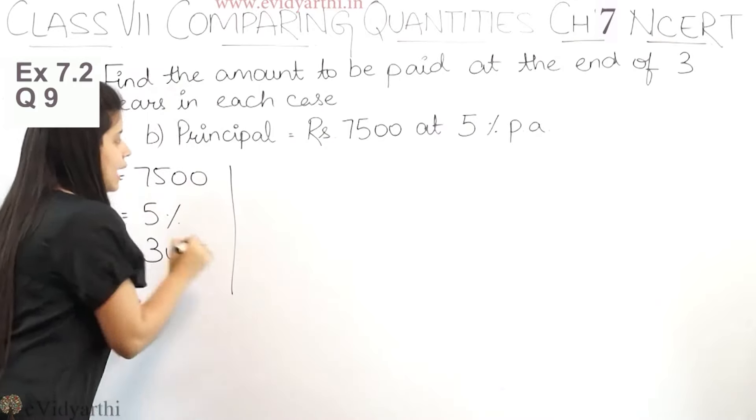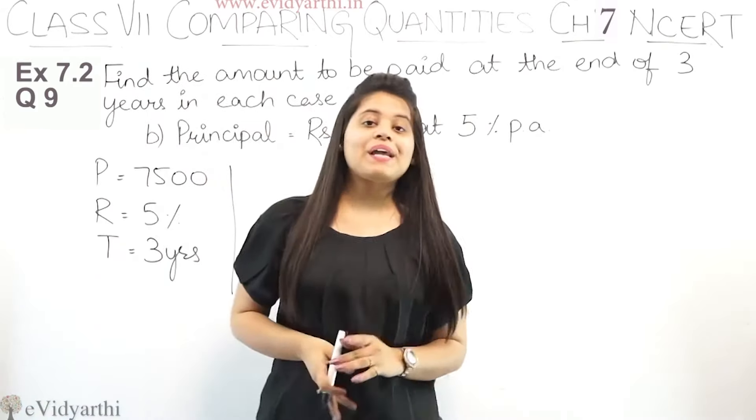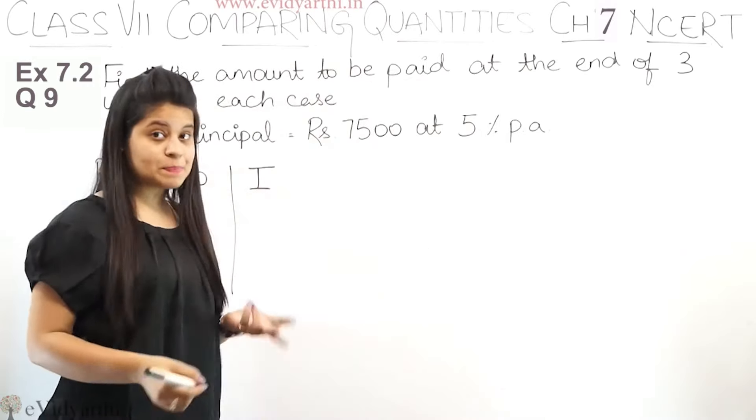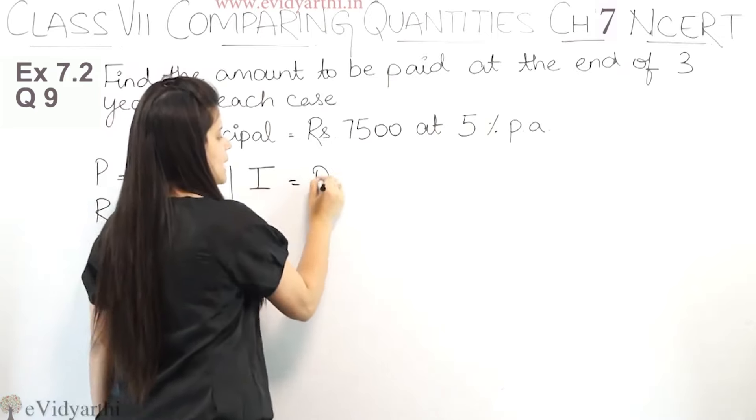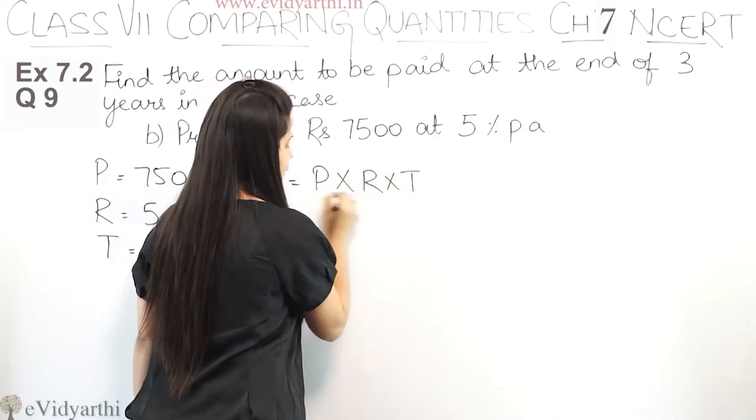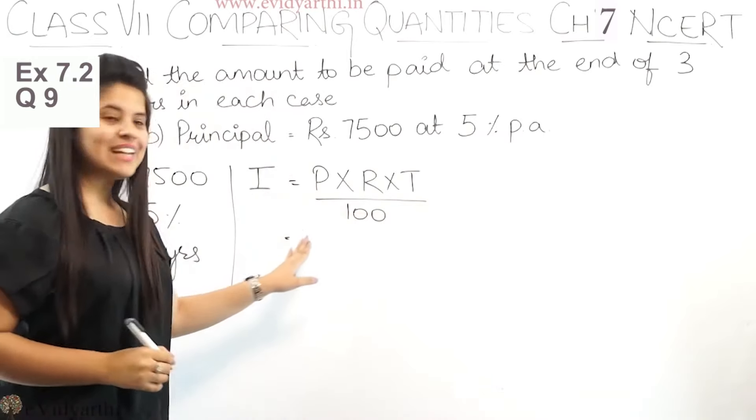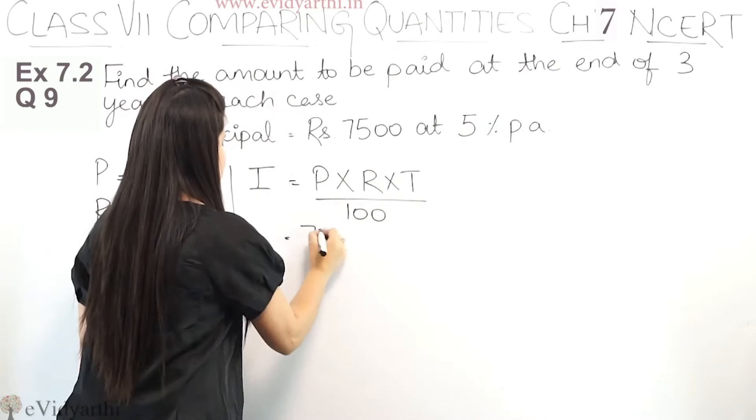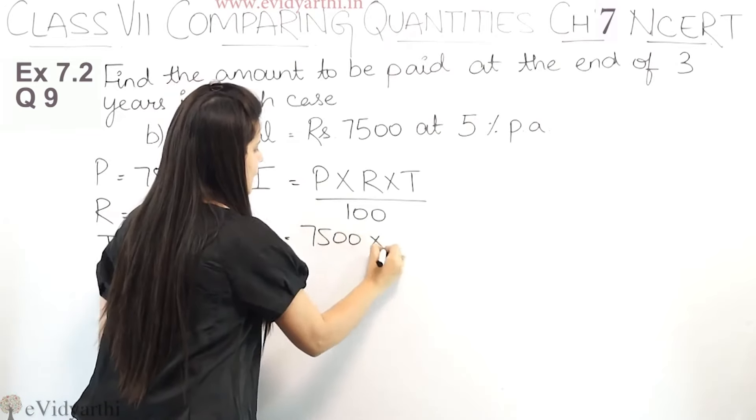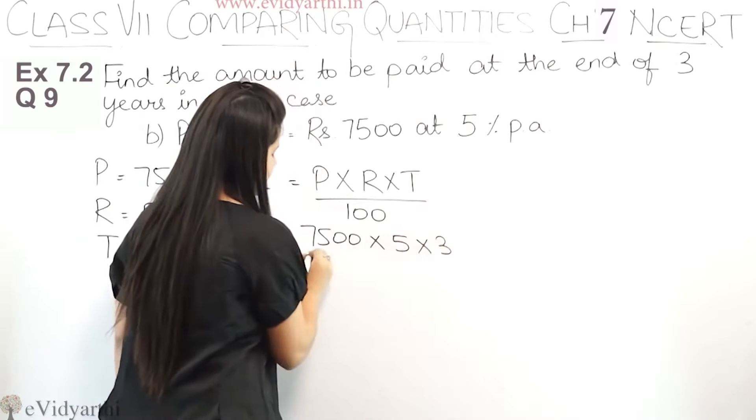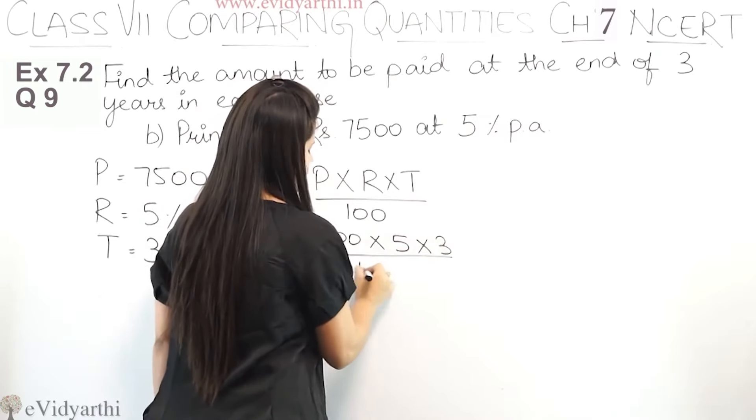Now again we have to find amount, so first we will calculate interest. You can call it interest or simple interest. So the formula is P into R into T upon 100. Now let's put the values: P is 7500, multiply by R is 5, and T is 3, upon 100.